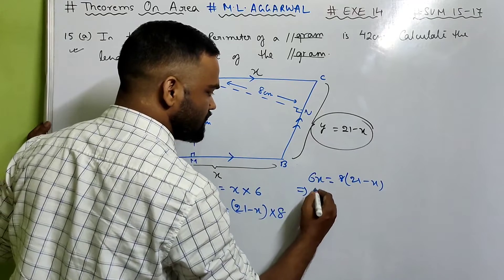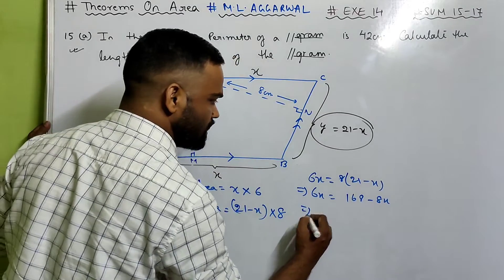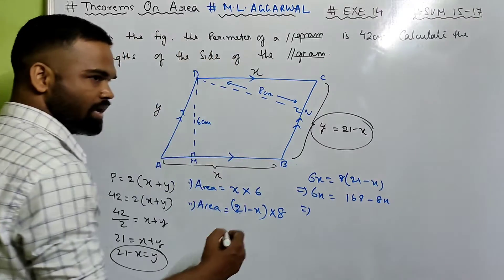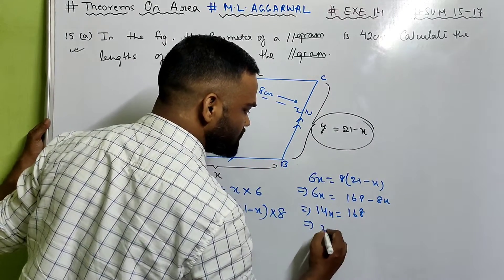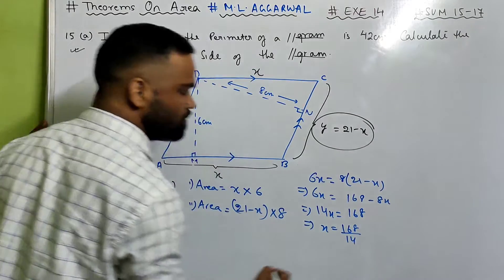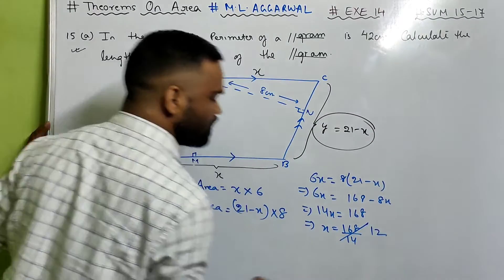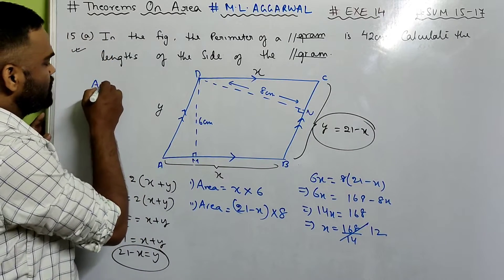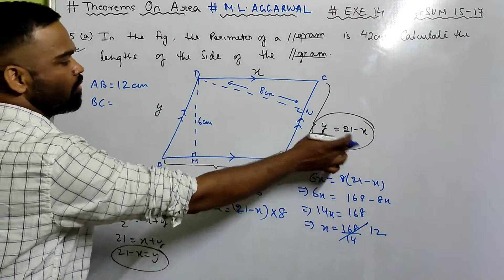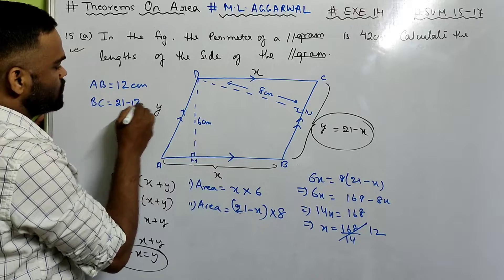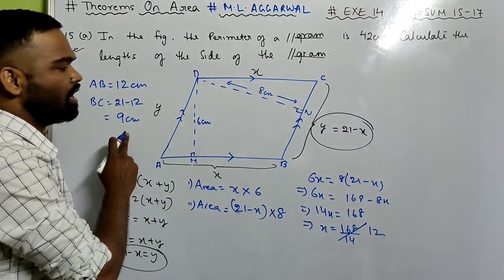We need to simplify this. 6X equals 168 minus 8X. So 6X plus 8X equals 168, that is 14X equals 168, which means X equals 168 divided by 14, which equals 12. So we got X as 12, which means AB equals 12 cm and BC equals 21 minus 12, that is 9 cm.